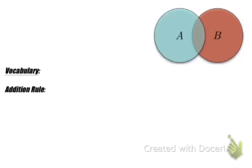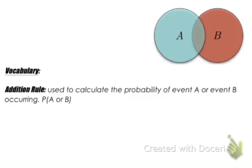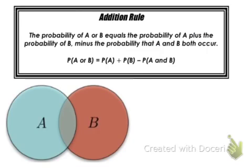The addition rule is used to calculate the probability of event A or event B occurring, which is noted by P(A or B). The addition rule states that the probability of A or B equals the probability of A plus the probability of B, minus the probability that A and B both occur.